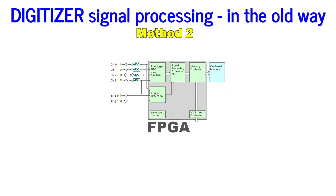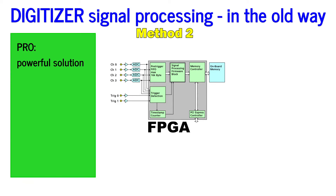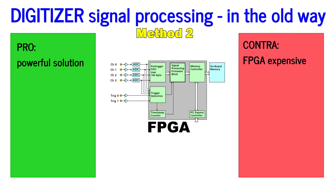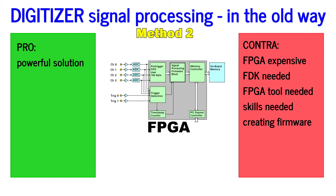The second approach uses FPGA technology — Field Programmable Gate Array. This is a powerful solution but it comes with a much higher cost and complexity. Large FPGAs are expensive, and creating custom firmware requires an FDK for the digitizer, tools from the FPGA vendor, and specialized hardware programming engineering skill. Creating firmware isn't for everyone, and even experienced developers can get bogged down in long development cycles. Furthermore, you're always limited by the FPGA that's actually on the digitizer — for example, if the available block RAM is exhausted, there's nothing more you can do.